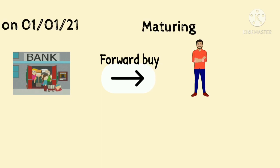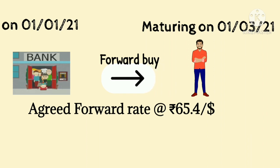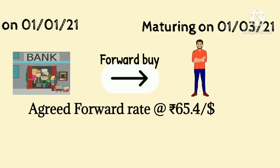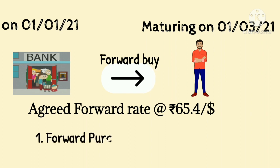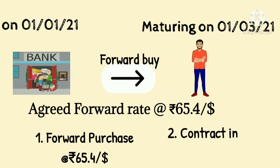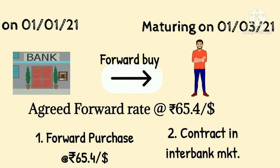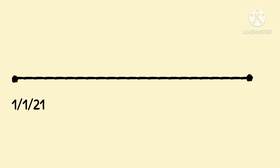Suppose on 1st Jan 2021, a bank has entered into a forward purchase contract to buy dollars on 1st March 2021 at an agreed forward rate of Rs 65.4 per dollar. In this scenario, the bank enters into two contracts: first one with the customer at an agreed forward rate, and the second one in the interbank market at cover rate. Since these two contracts were expiring on the same date, that is 1st March 2021, they would cancel out each other.